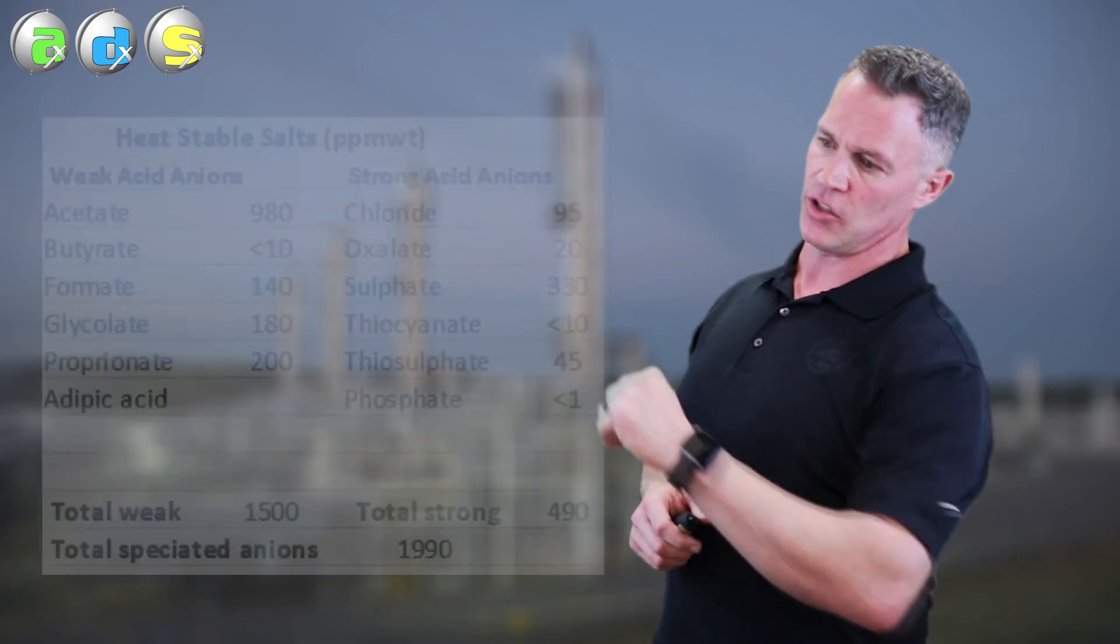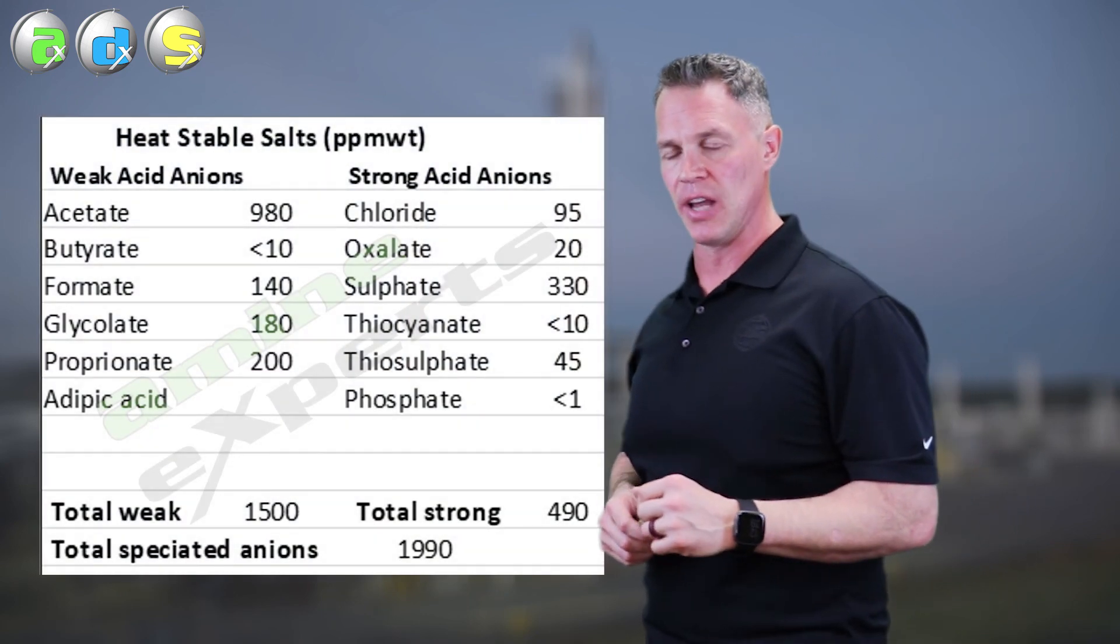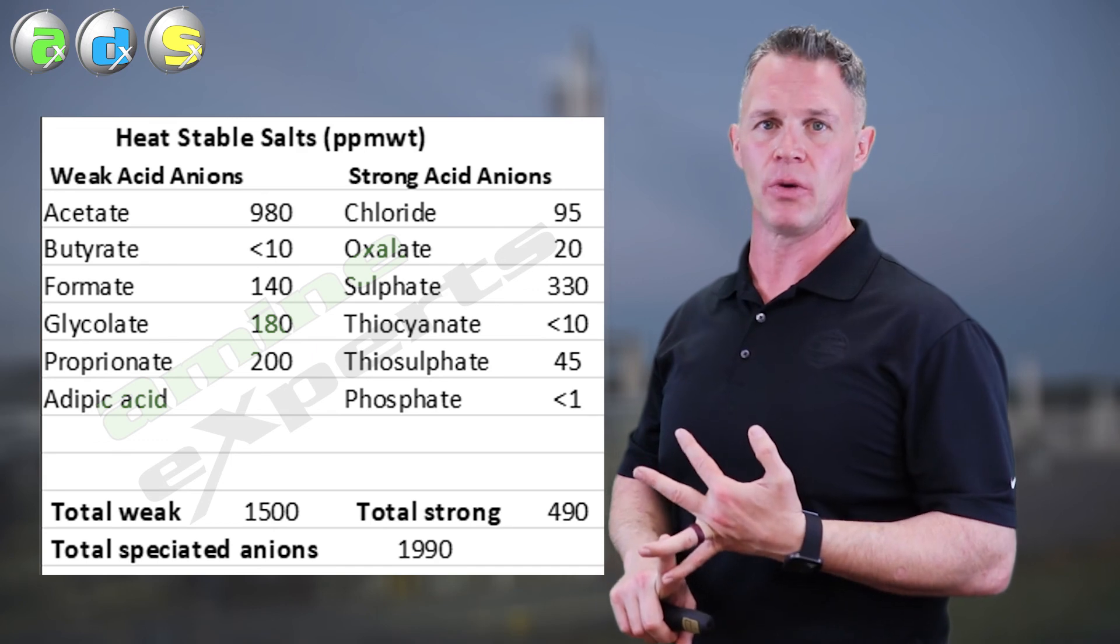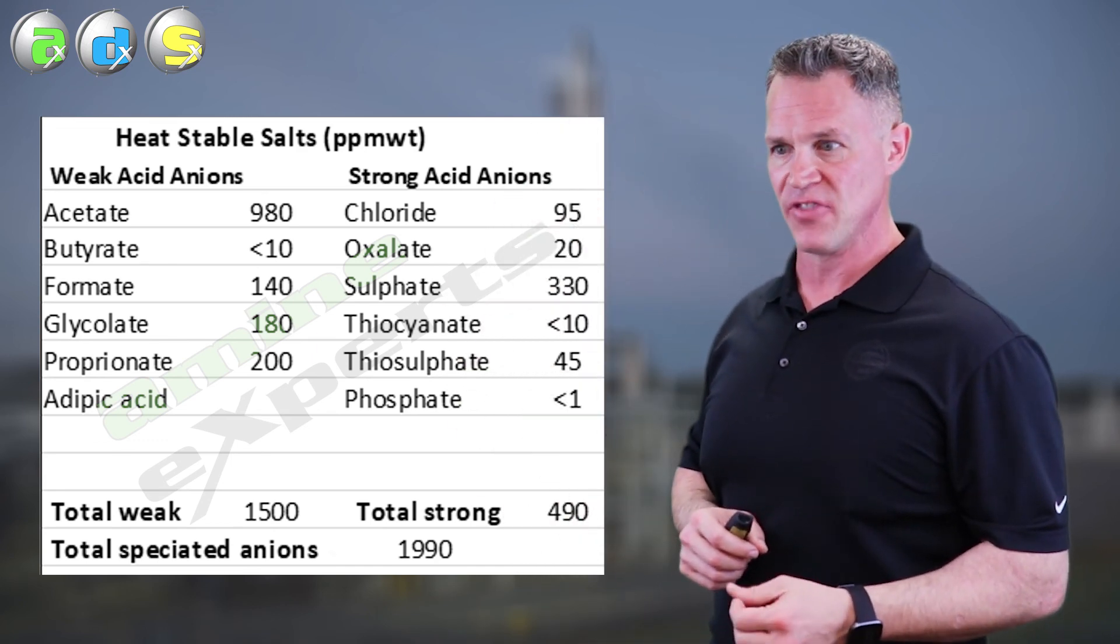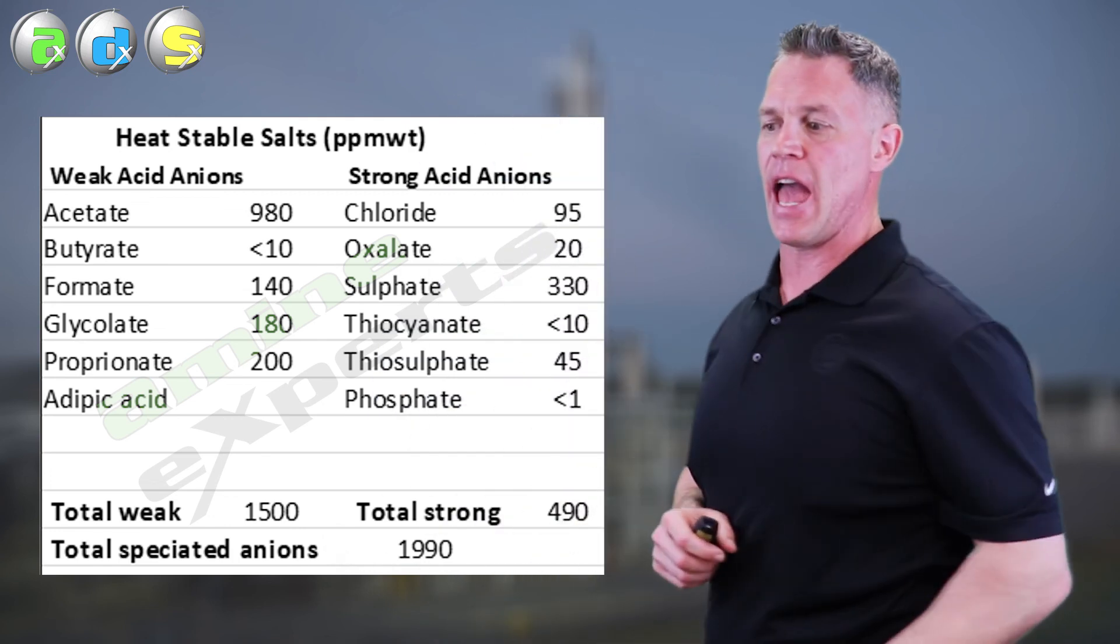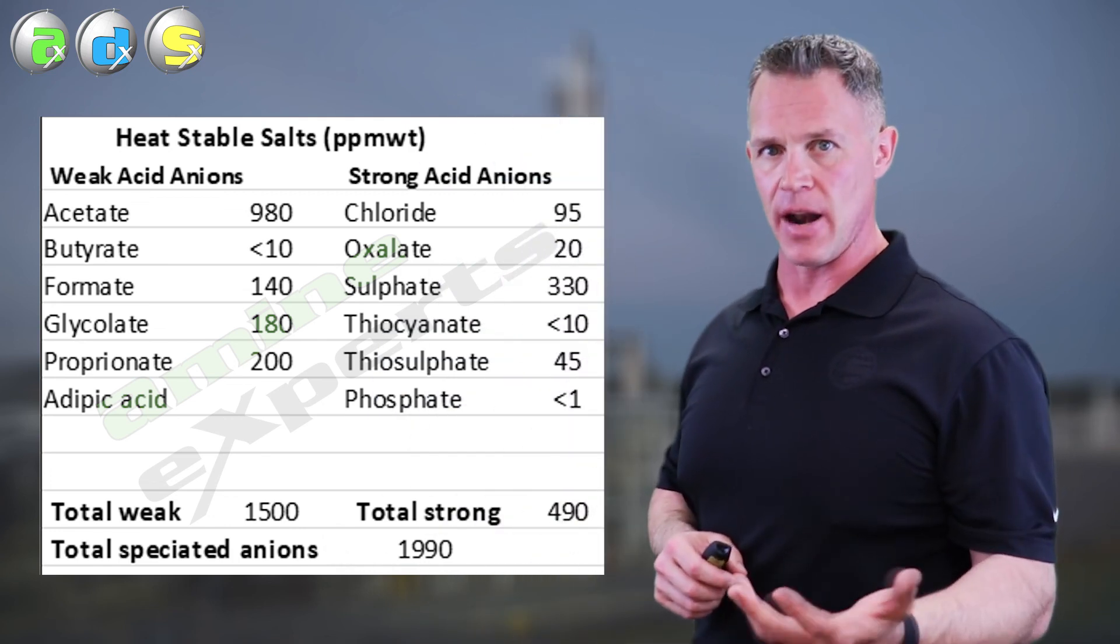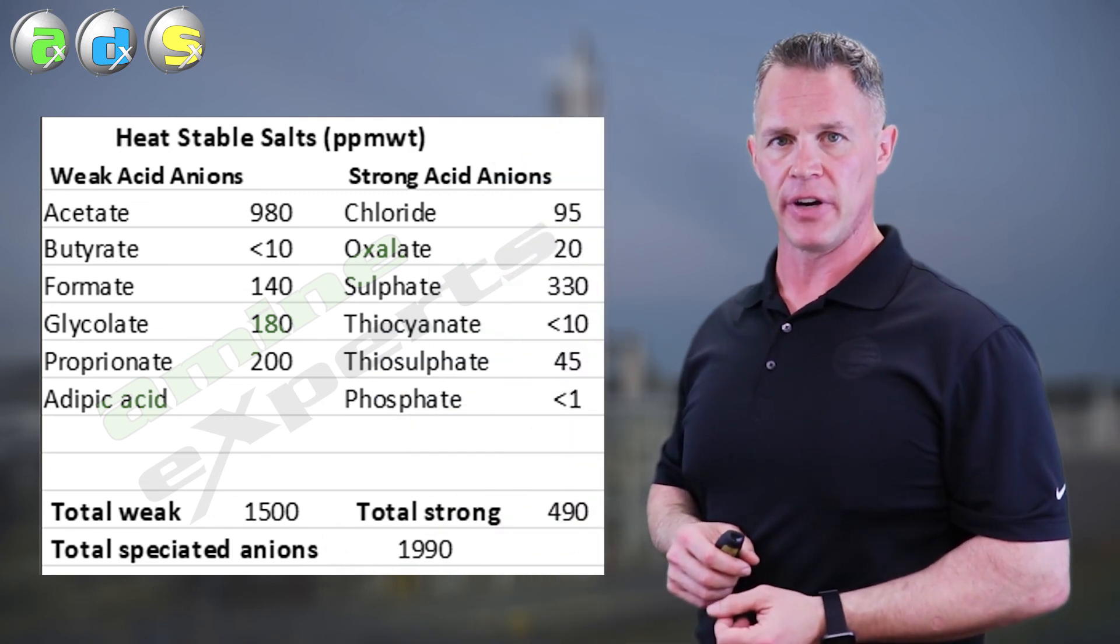And so what you do there is you get one of these amine analyses done by your vendor or by us or whoever can break out heat stable salts in their ion chromatograph. You just add up all of the anions and you don't want that number to be above those specified limits.